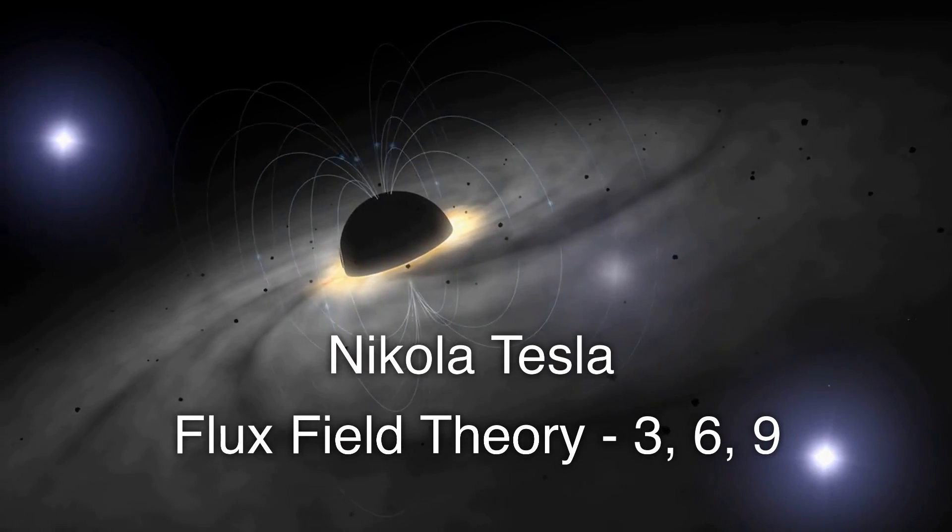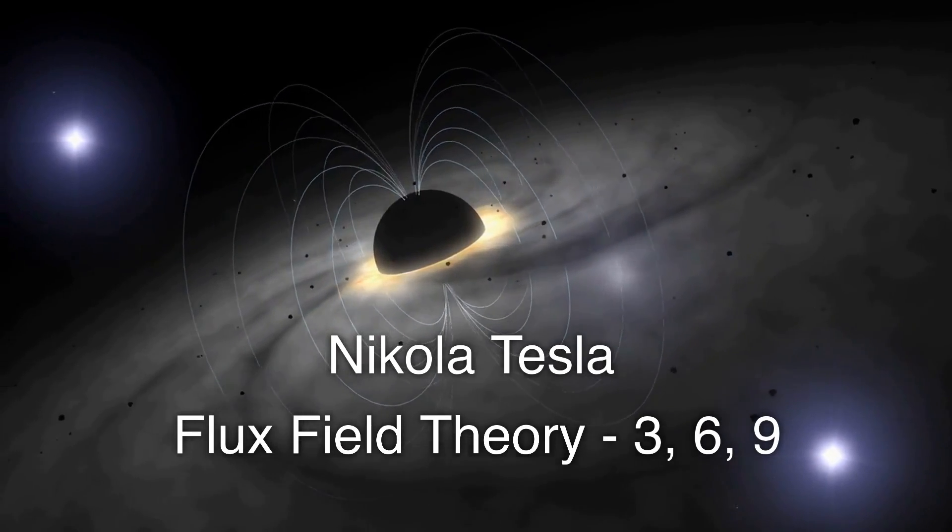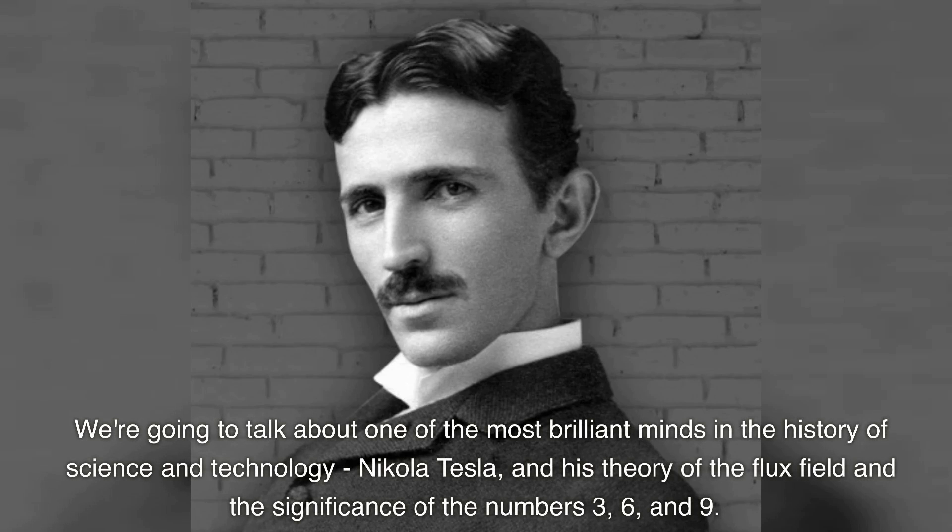Nikola Tesla Flux Field Theory 3, 6, 9. We're going to talk about one of the most brilliant minds in the history of science and technology, Nikola Tesla, and his theory of the flux field and the significance of the numbers 3, 6, and 9.